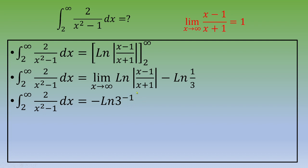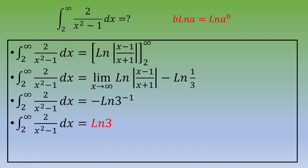We simplify using the rule: b times ln(a) equals ln(a to the power b). The final answer is: the integral from 2 to infinity of 2 over x squared minus 1 dx equals ln of 3.